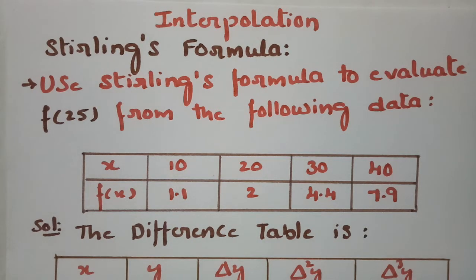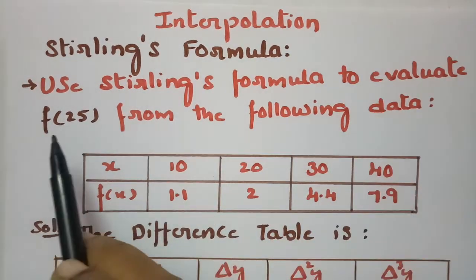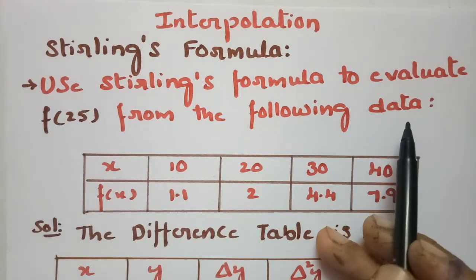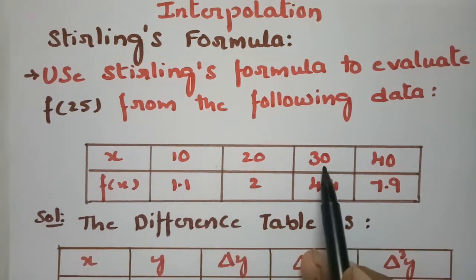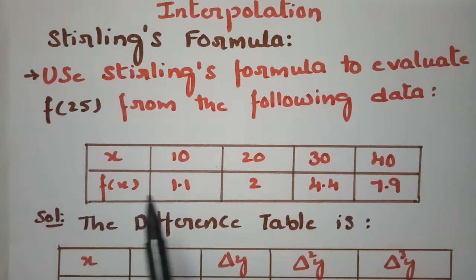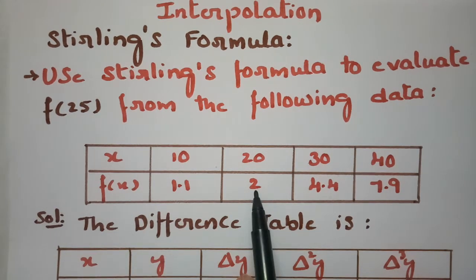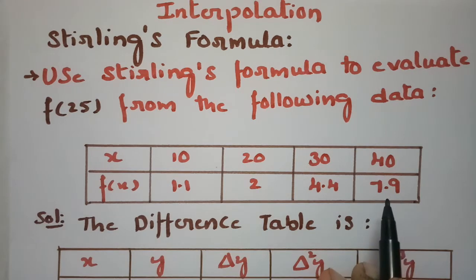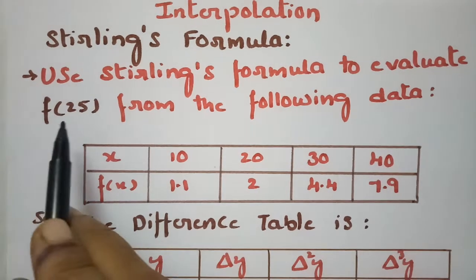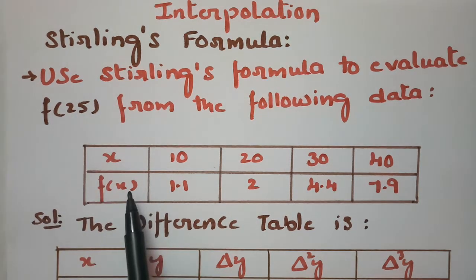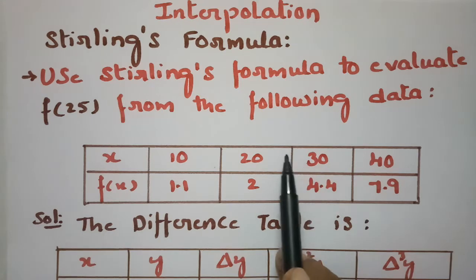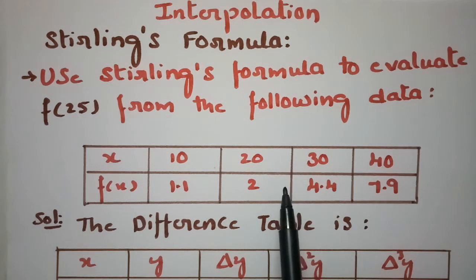Today's interpolation problem requires using Stirling's formula to evaluate f(25) from the following data. The x values are 10, 20, 30, and 40, and the corresponding f(x) values are 1.1, 2.0, 4.4, and 7.9. We need to find the value of f(25), which lies between x = 20 and x = 30.